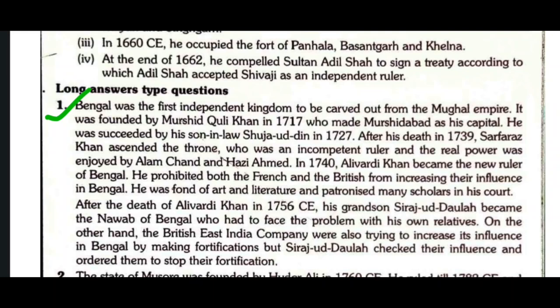Long answer question one: Critically evaluate the emergence of Bengal as an independent state. Bengal was the first independent kingdom to be carved out from the Mughal Empire. It was founded by Murshid Quli Khan in 1707, who made Murshidabad his capital. He was succeeded by his son-in-law Shujauddin in 1727.